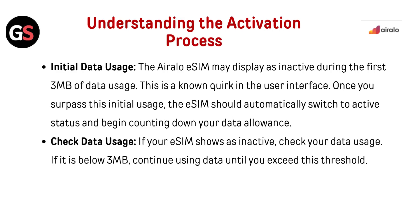Understanding the Activation Process — Initial Data Usage: the AirLo eSIM may display as inactive during the first 3MB of data usage. Once you surpass this initial usage, the eSIM should automatically switch to active status and begin counting down your data allowance. If your eSIM shows as inactive, check your data usage; if it is below 3MB, continue using data until you exceed this threshold.